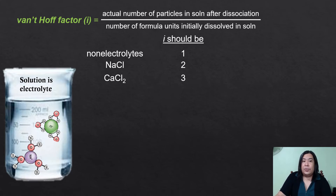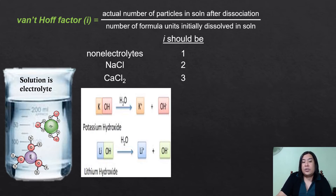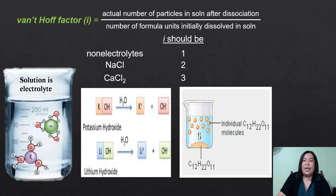You can easily identify the Van't Hoff factor just by looking at the chemical formula — sodium is 1 and chloride is 1, so the Van't Hoff factor is 2. The same principle applies to other ionic compounds that are very soluble in water. For example, potassium hydroxide when added to water completely dissociates into potassium ion and hydroxide ion. Similarly, lithium hydroxide is very soluble in water, and the Van't Hoff factor of lithium hydroxide is also 2.